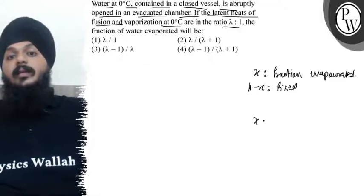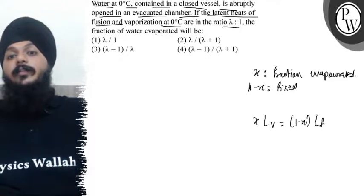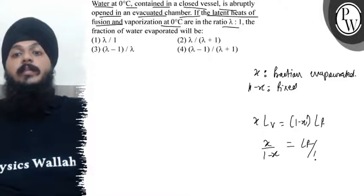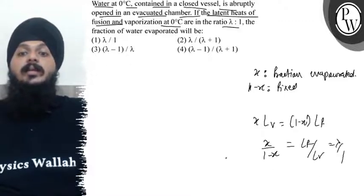Right? So x into latent heat of vaporization is 1 minus x into latent heat of fusion. So 1 minus x by x is latent heat of fusion by latent heat of vaporization, which is λ by 1.